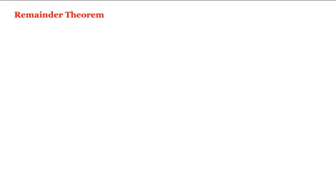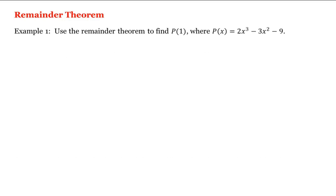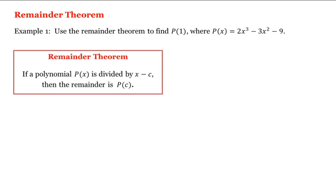Let's learn about the remainder theorem. For example, let's use the remainder theorem to find p of 1, where p of x is equal to 2x cubed minus 3x squared minus 9. The remainder theorem states the following: if a polynomial p of x is divided by x minus c, then the remainder of that division is p evaluated at c.